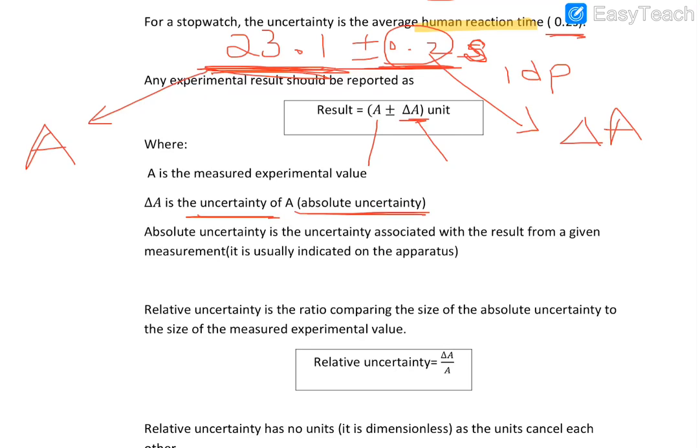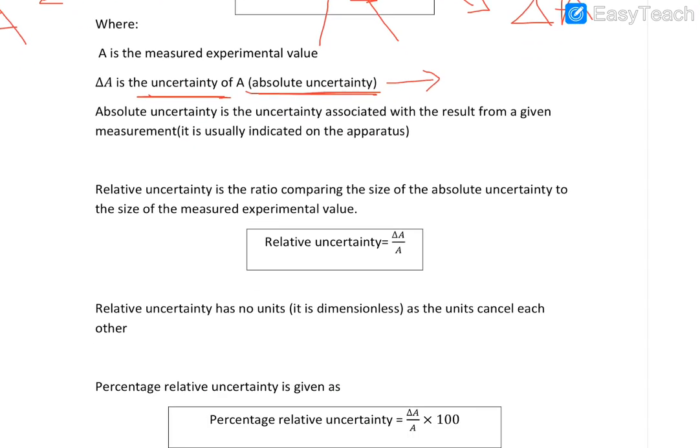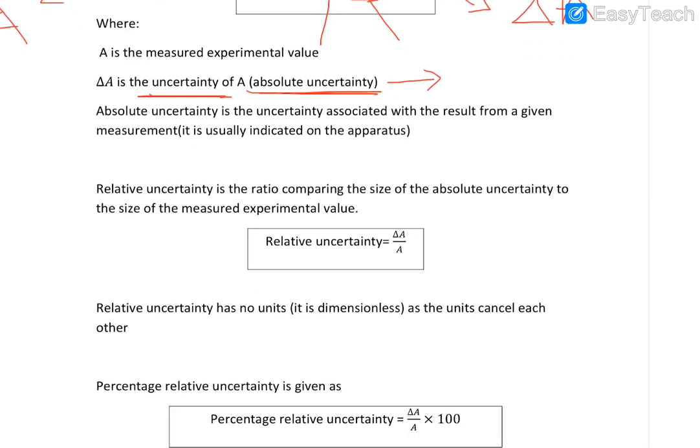This can be obtained by calculations, which you'll see afterwards. Absolute uncertainty is the uncertainty associated with the result from a given measurement. You have to know this definition—sometimes it's asked.